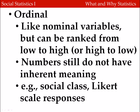The next level of measurement is called an ordinal measure. This is like a nominal measure, except there is rank ordering — we can rank the categories from low to high or high to low. But the numbers still don't have any inherent meaning; they're still just labels. Examples of ordinal variables might be social class or Likert scale responses, where people rate their agreement with a statement using categories like strongly disagree, disagree, neutral, agree, or strongly agree.